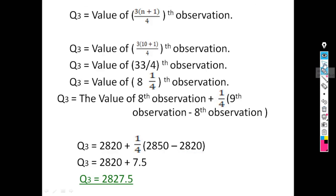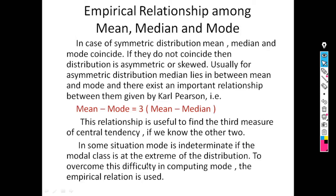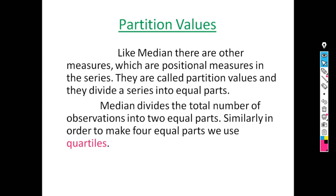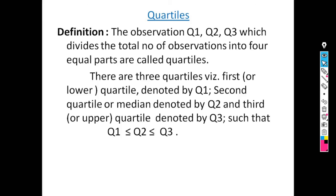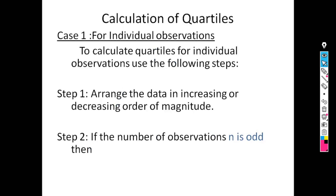In this way, we can calculate the lower quartile, median, and upper quartile when the number of observations is even. In today's lecture, we covered merits and demerits of mode, the empirical relationship among mean, median, and mode (Mean − Mode = 3 × (Mean − Median)), and partition values — specifically quartiles Q1, Q2, Q3 — which divide the total observations into four equal parts, along with their calculation for both odd and even n.